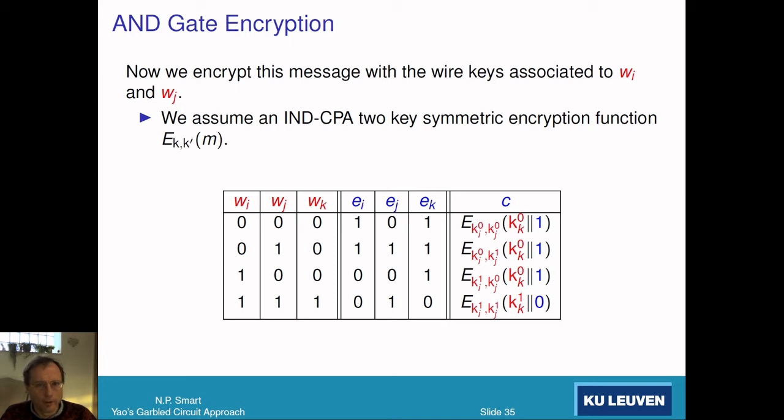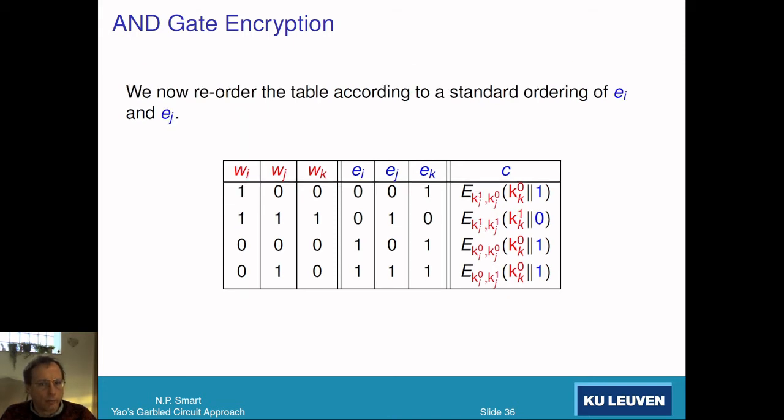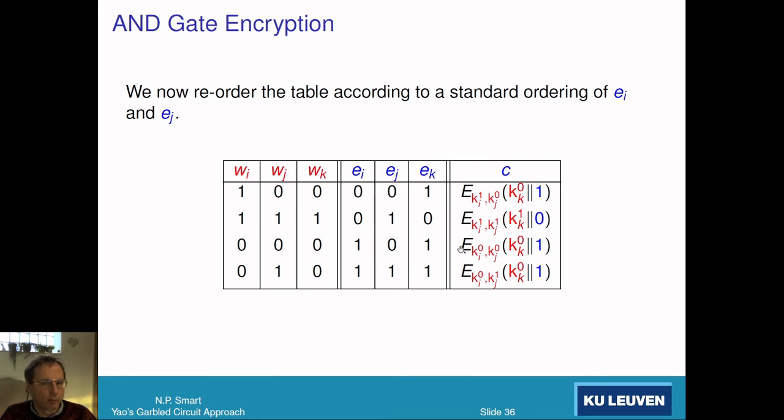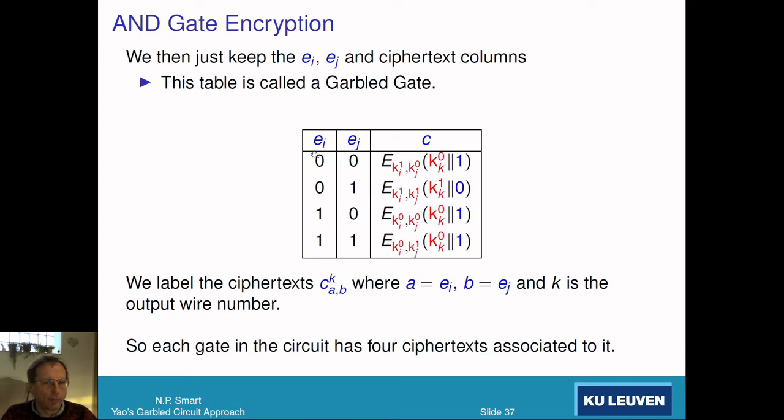And now we reorder like we did before. We do a permutation. Here's the standard truth table order, and now we've reordered it in some random way. Now we throw away everything, so we just keep the external values of the inputs, which just look random because we can place them in standard order: e_0, e_0, e_1, e_1, standard order. Then we have the encryptions corresponding to them.